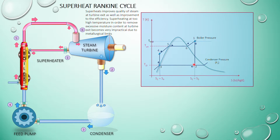Once you have found the dryness fraction, substitute it into the equation h2 = hf + x·hfg to find h2. At state point 3, which is saturated liquid, h3 equals hf at the condenser pressure. For h4, use the formula: h4 = 0.001 × (boiler pressure − condenser pressure) × 10⁵ + h3, since point 4 is outside the saturated liquid line in the property tables.